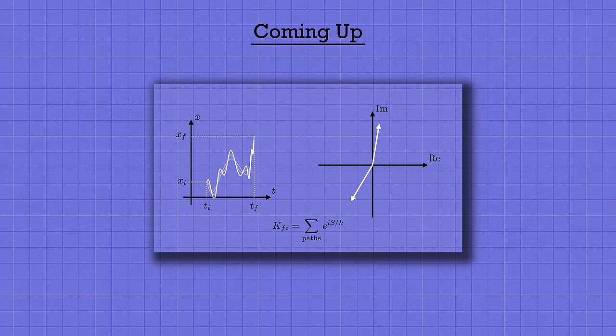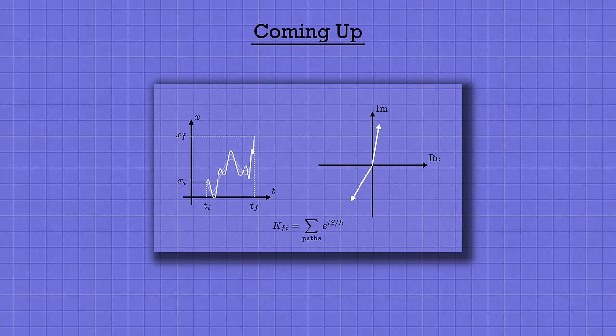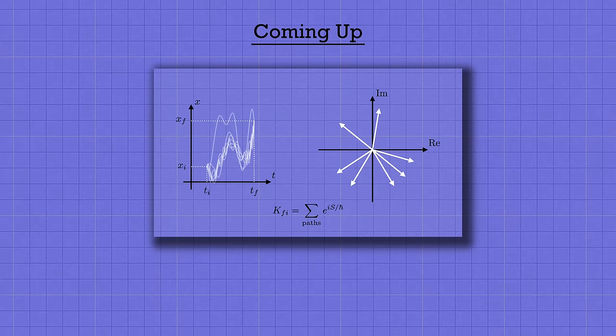It's called the path integral formulation of quantum mechanics. And once you understand it, Feynman's perspective will give you a ton of insight into the counterintuitive way that things behave in the quantum world. And at the same time, it will teach you how the laws of classical physics, like f equals ma, are derived from the more fundamental quantum mechanical description of nature.